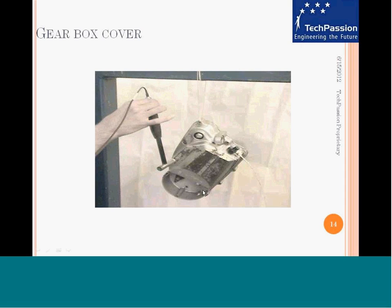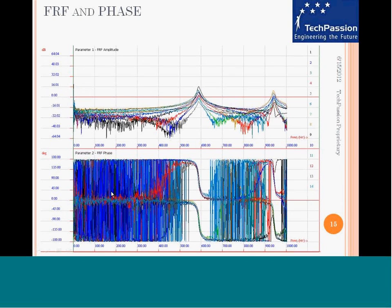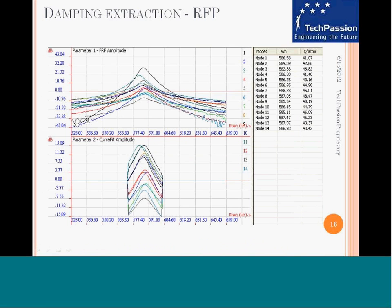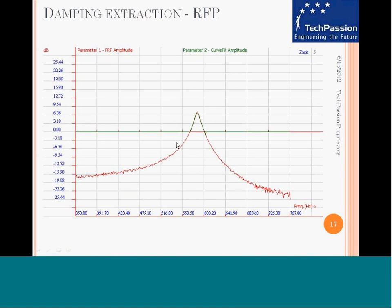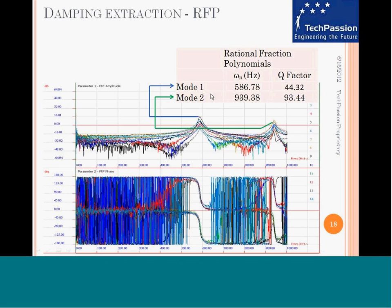The third component is a gearbox cover from a motorcycle. Here also, we perform a single input, single output modal test with an impact hammer and an accelerometer to measure the responses. The measured frequency response function shows amplitude and phase plots. Curve fitting results are shown for one FRF at one resonant frequency. The compiled results for the first and second mode list the resonant frequency and Q factor.